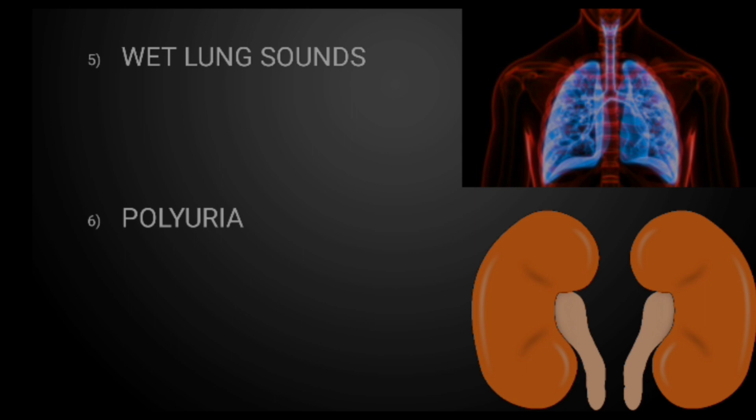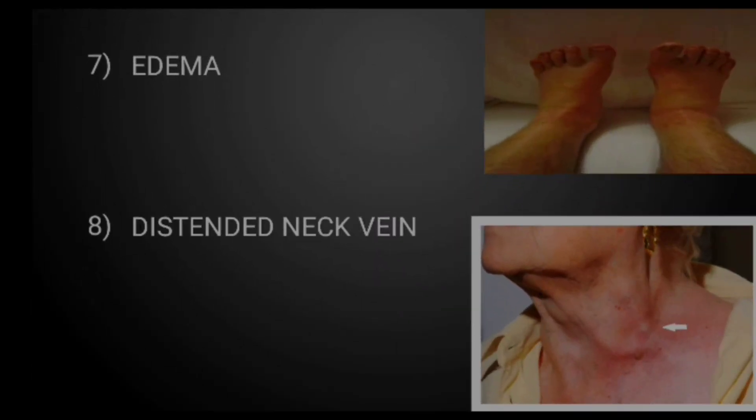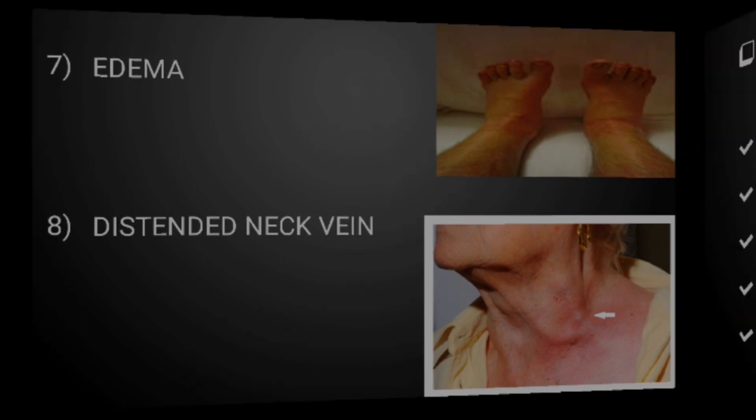The sixth sign is polyuria, meaning increased urine output. The seventh is skin edema — there is so much fluid in the vessels that it leaks out into the interstitial space. You can also see distended neck veins, called JVD, which stands for jugular vein distension. Because of the excess volume of fluid, the neck will look puffy.